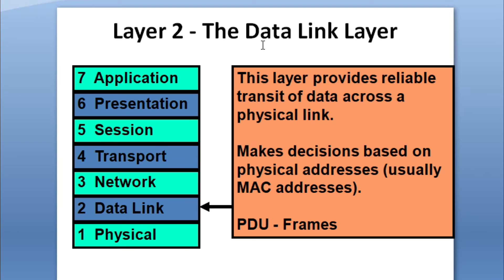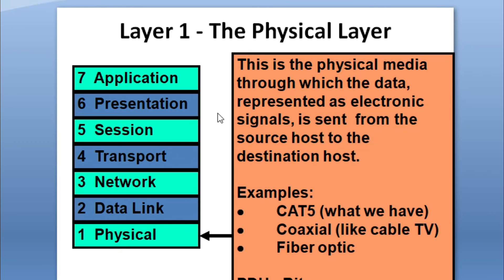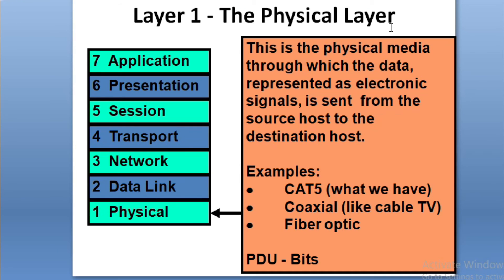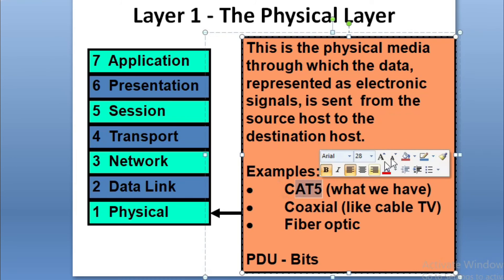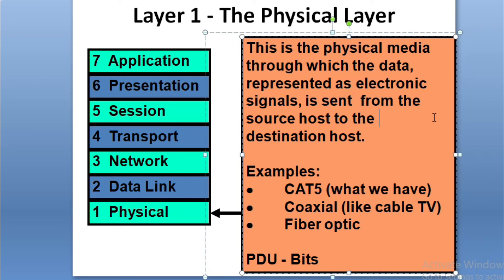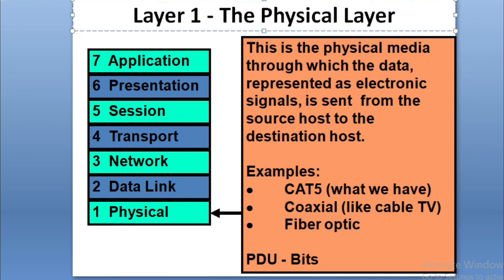In summary, the Network layer uses IP addresses for data travel, and the Data Link layer uses MAC addresses. The Physical layer is the lowest layer of the OSI model. It mainly deals with physical hardware: cables and connectors such as Cat5 (Category 5) cable, coaxial cable used in LAN networking, TV cable connections, and fiber optic cables which provide high-speed internet.